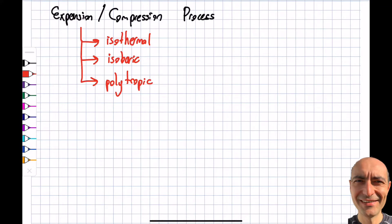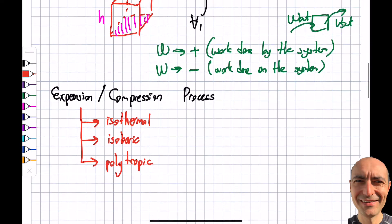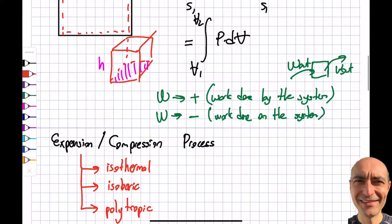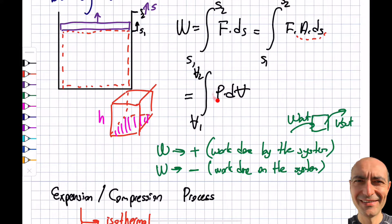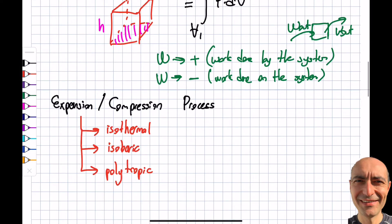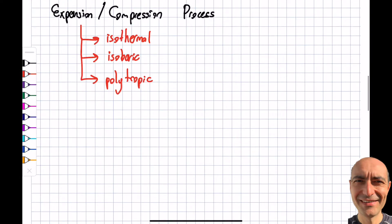Let's go back to the previous segment. I obtained the boundary work to be this formula. The question is how am I going to analyze this? In nature and in application space, we have three general processes. They are not limited to these three — there can be a process that doesn't fit any of them — but these are the most common ones.